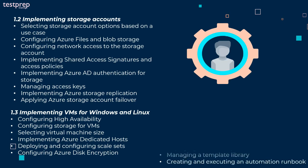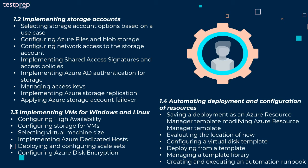Fourth, automating deployment and configuration of resources, divided into six sub-parts: saving a deployment as an Azure Resource Manager template, modifying Azure Resource Manager template, evaluating the location of new resources, configuring a virtual disk template, deploying from a template, managing a template library, and creating and executing an automation runbook.